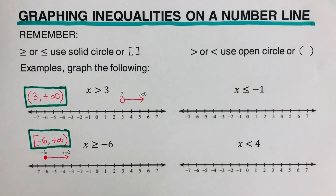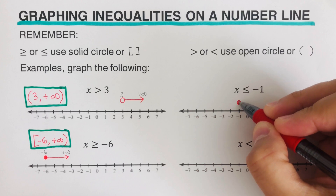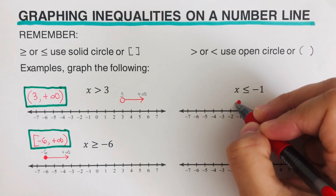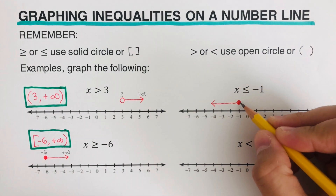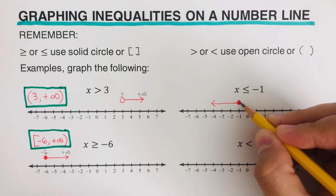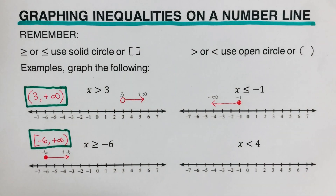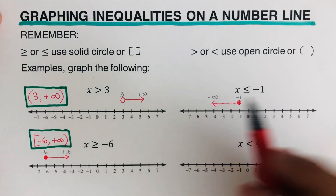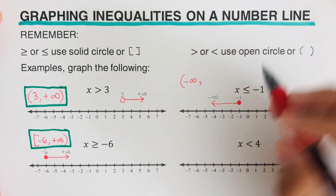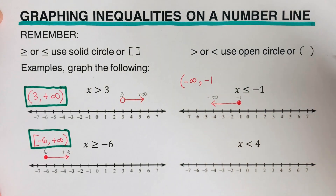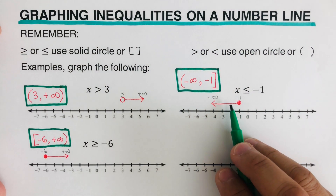For x ≤ -1: since there is a bar underneath, we use a closed circle on negative 1. The direction of the arrow is to the left, going all the way to negative infinity. Negative 1 is included since it's a closed circle. In interval notation, we start with the leftmost value, which is negative infinity — we use a parenthesis — and it goes to negative 1 with a bracket. So the solution is (-∞, -1].